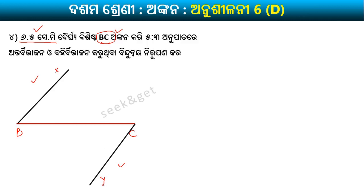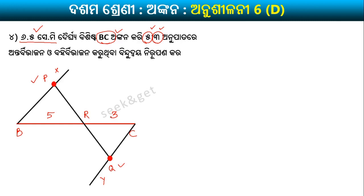On ray BX and ray CY, using compass, we cut arcs of 5 cm and 3 cm respectively. Where those arcs intersect, we get the intersection points. We now have 5 parts and 3 parts — so we can do both internal and external division from this construction.